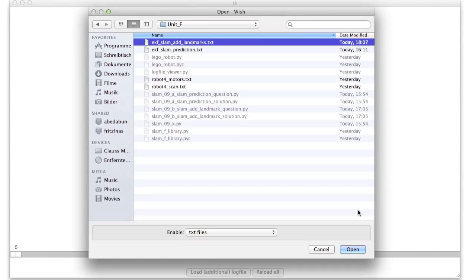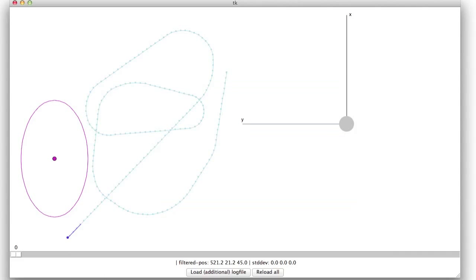And after you implemented and ran this, it will produce the ekf slam at landmarks.txt file. So load this and you will see the following. That's the trajectory. And there's also our landmark at 400, 700 with a standard deviation of 300 in x and 500 in y.